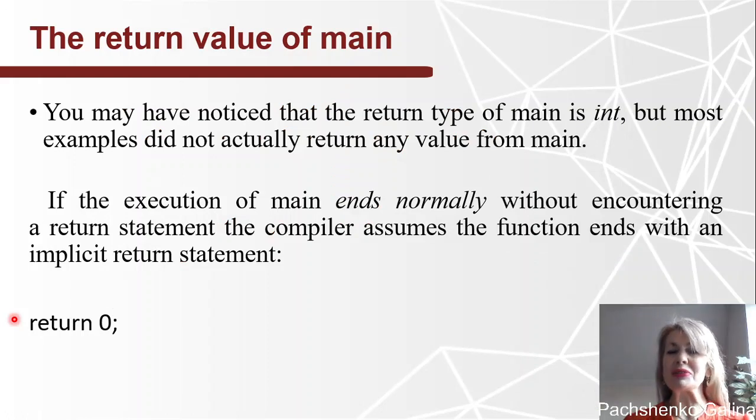The return value of main. You may have noticed that the return type of main is int, but most examples didn't actually return any value from main. If the execution of main ends normally without encountering a return statement, the compiler assumes the function ends with an implicit return 0.